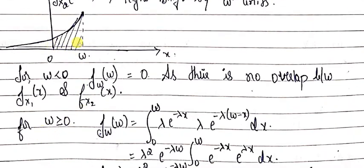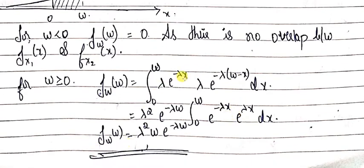For w greater than or equal to zero, the pdf of W is evaluated by integrating fx1(x) = lambda times e to the power minus lambda x multiplied by fx2(w minus x), replacing x with w minus x, over the limits 0 to w. Separating terms, lambda squared is factored out. The integrand reduces to e to the power minus lambda w times e to the power lambda x, and upon integration from 0 to w gives the value w, yielding lambda squared times w times e to the power minus lambda w.